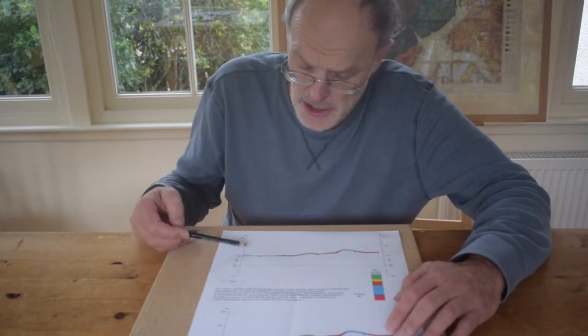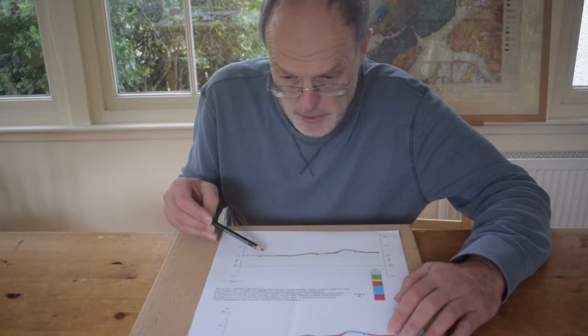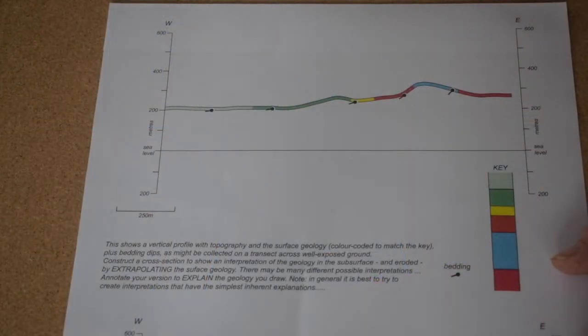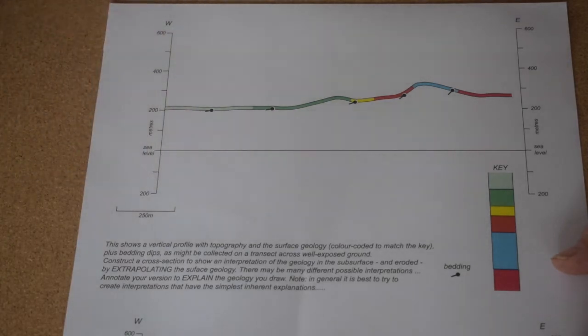The cross-section template shows the landscape across which the geology has been observed as outcrop and it's displayed with a vertical scale and horizontal scale that are equal.